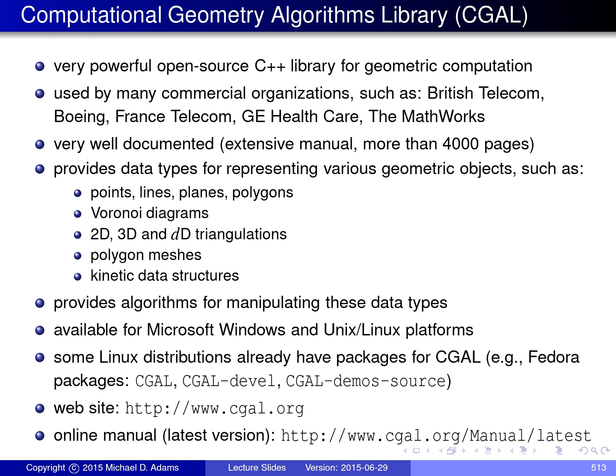The code is available for both Microsoft Windows and Unix platforms and it's quite portable. It works on a lot of different platforms with C++ compilers. Some Linux distributions already have packages for CGAL. For example, if you happen to use Fedora Linux, the packages CGAL, CGAL-DEVEL, and CGAL-DEMO-SOURCE contain, at least at the time of this presentation, the CGAL software.